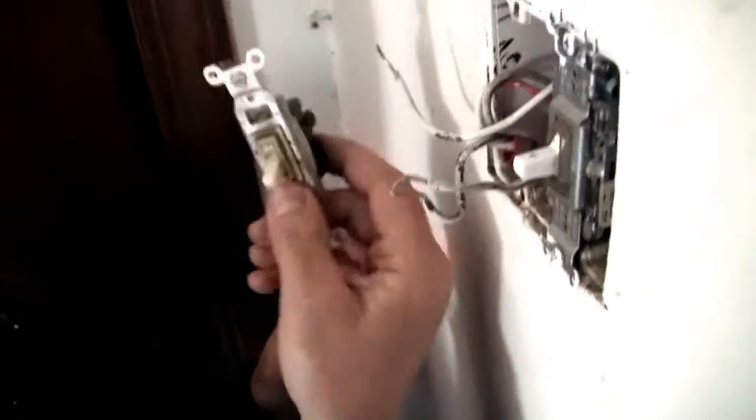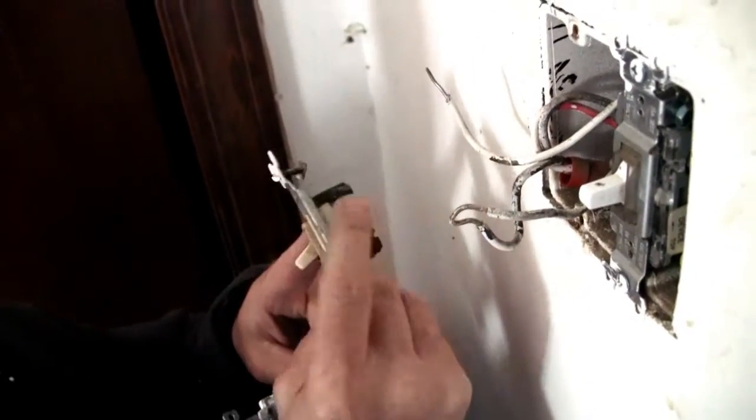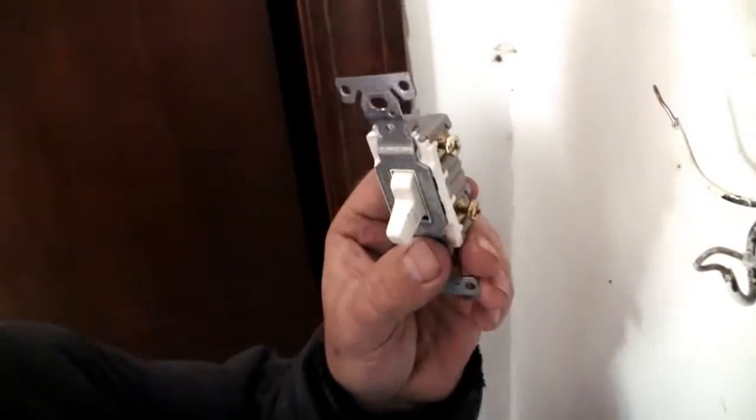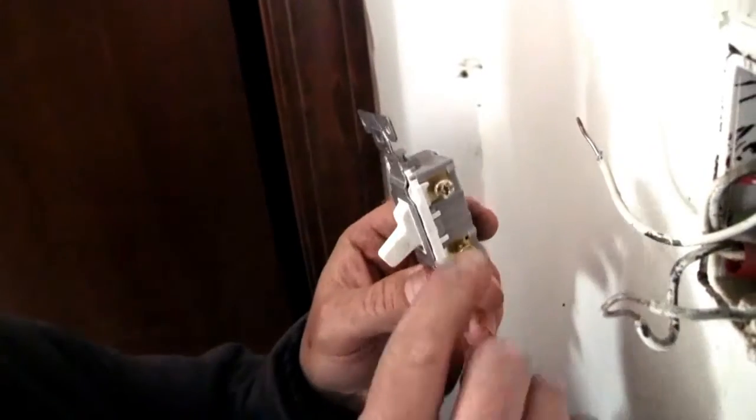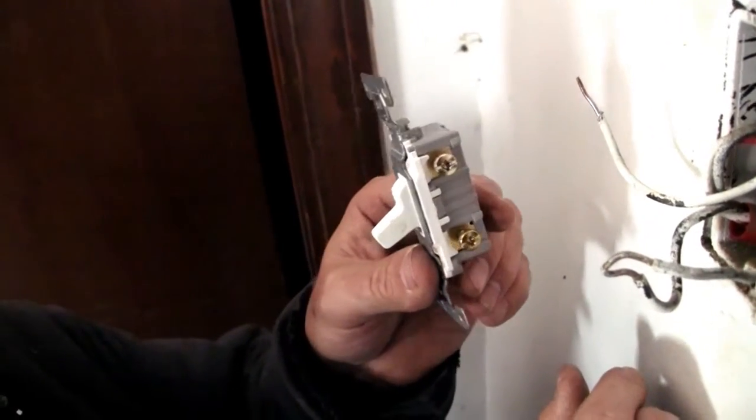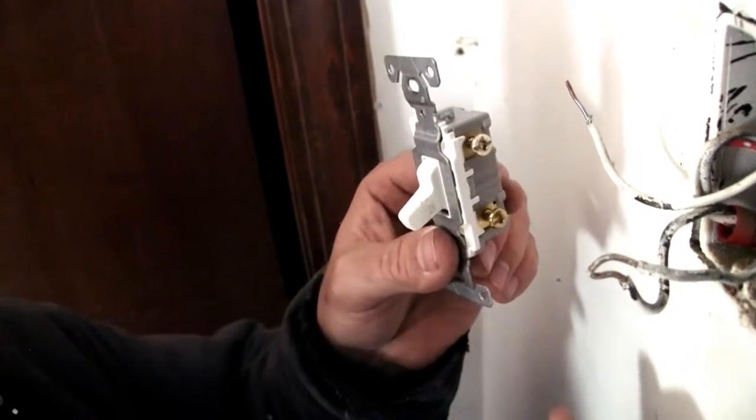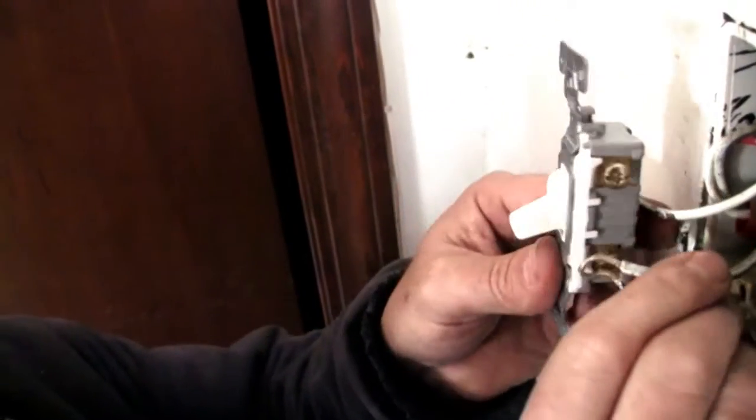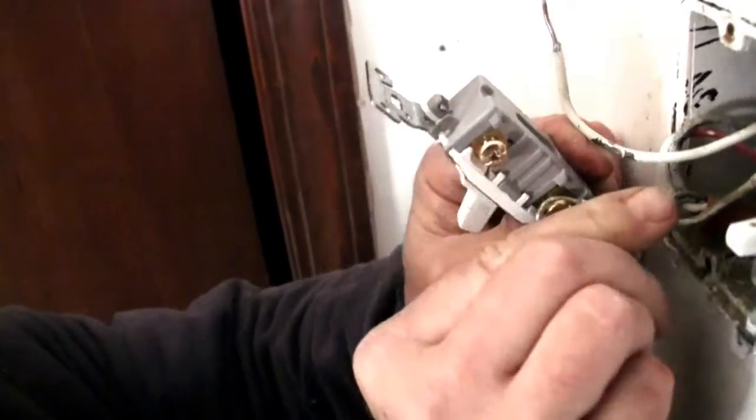This is the old switch and it had the screws on each side of it. This is the new switch. Even though it's not exactly like the old one, it works the same way. There's one at the top and one at the bottom and it really won't matter which one goes on the top and which goes on the bottom because they're both hot wires. The hot wire which is the black wire attaches to the brass screws.